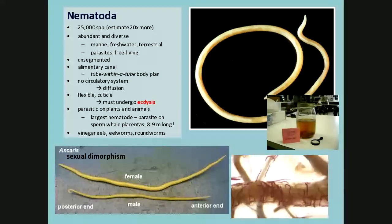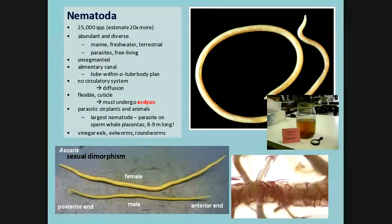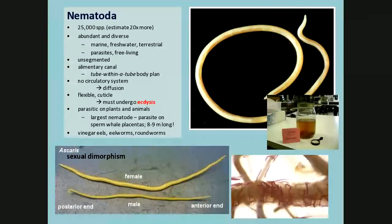They have a cuticle — a flexible cuticle — and that's what they shed when they molt. When you do the dissections on Monday, as you cut through with the dissecting knife on the worm, you'll notice at the beginning it's a little more difficult — that's the cuticle. Then it becomes much easier. They can be beneficial, found in all kinds of habitats. There are also parasitic nematodes; the longest parasite is actually a nematode parasitic on sperm whale placentas, growing eight to nine meters — about thirty feet long.